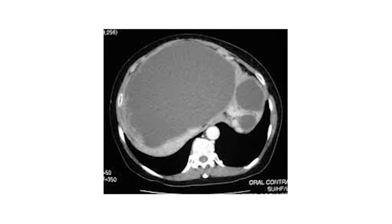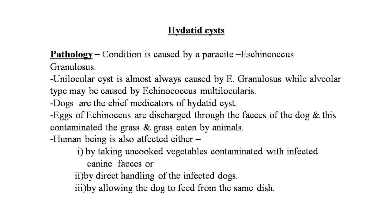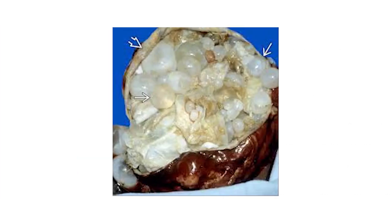Now, the hydatid cyst of the liver. The condition is caused by the parasite Echinococcus granulosus. The unilocular cyst is almost always caused by Echinococcus granulosus, while the alveolar type may be caused by Echinococcus multilocularis.